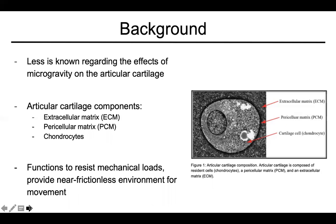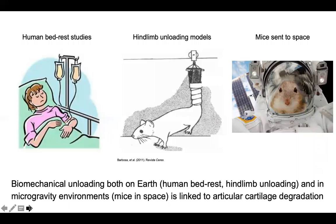Degradation associated with proteoglycan and collagen loss is thought to be irreversible due to the avascular nature of the articular cartilage. Therefore, unloading of the articular cartilage in a microgravity environment may have deleterious effects on joint health. Studies show that biomechanical unloading both on earth and in microgravity environments is linked to articular cartilage degradation. For example, human bed rest patients exhibit proteoglycan loss when immobilized. Studies on microgravity report reduced proteoglycan synthesis, lower dynamic stiffness of cartilage constructs, and cytoskeleton reorganization.